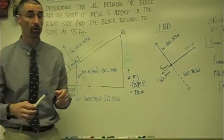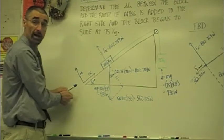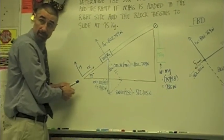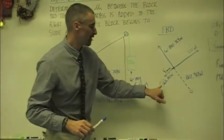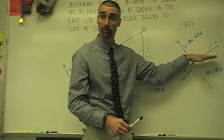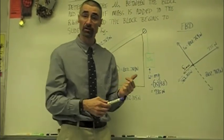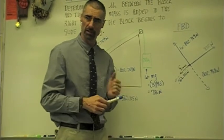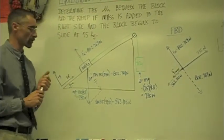If we were pulling the block down the ramp instead of pulling it up the ramp, then this would help us pull down, and the force of static friction would flip the other direction, because static friction is always going to act opposite the direction that you're trying to pull.